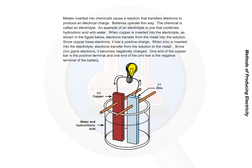Since copper loses electrons, it has a positive charge. When zinc is inserted into the electrolyte, electrons transfer from the solution to the metal. Since zinc gains electrons, it becomes negatively charged. One end of the copper bar is the positive terminal, and one end of the zinc bar is the negative terminal of the battery.